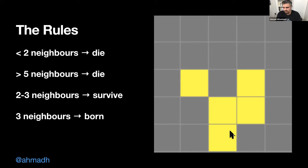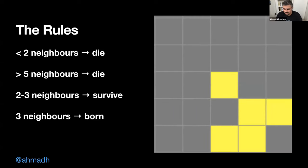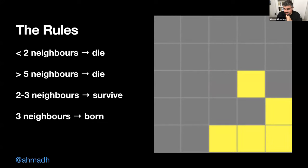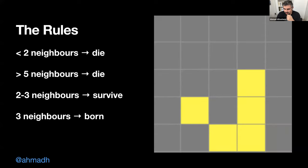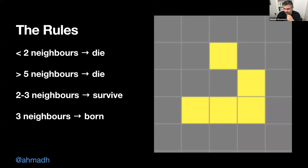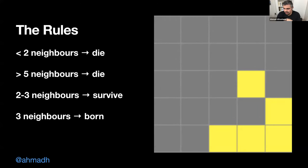You have to go through each cell individually and see what happens to it. Even though the decision at the cell level is easy, you have to do it for every single cell and it's hard to immediately imagine what the next pattern will look like just by looking at it. But playing it forward through several generations, you end up back at the same pattern we started with.